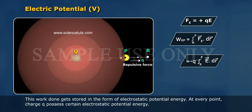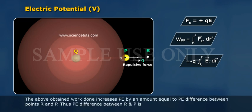This work done gets stored in the form of electrostatic potential energy. At every point charge q possesses certain electrostatic potential energy. The above obtained work done increases PE by an amount equal to PE difference between points R and P.